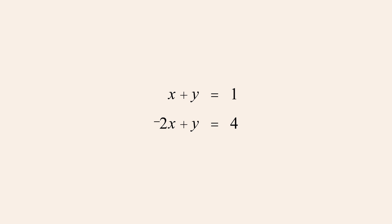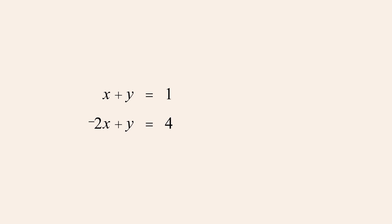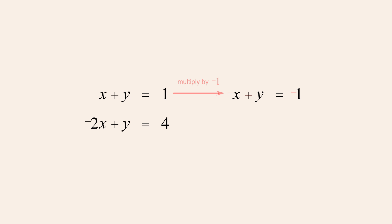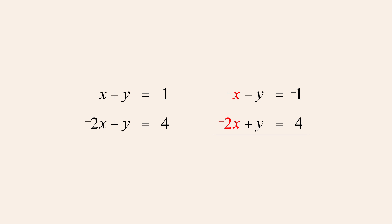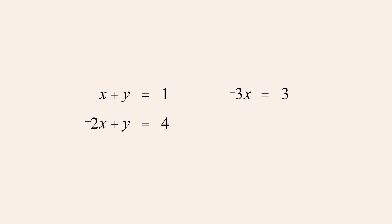For instance, in this example, we could choose to eliminate the variable y by multiplying the top equation by negative one and then adding the equations. This gives us an equation with only one variable, x, which can then be solved to find the value of x. Once we know the value of one variable, that value can then be substituted back into either of the original equations to find the value of the other variable.